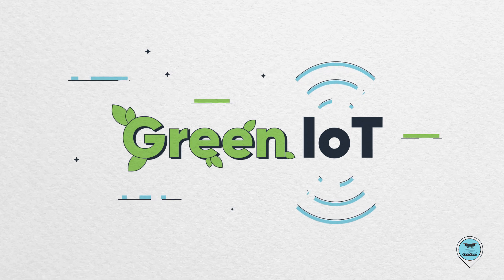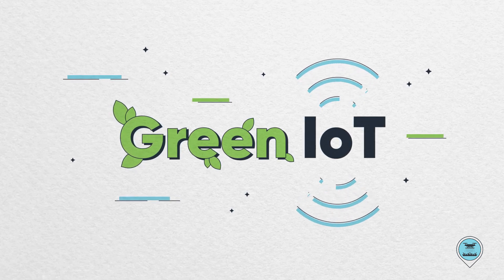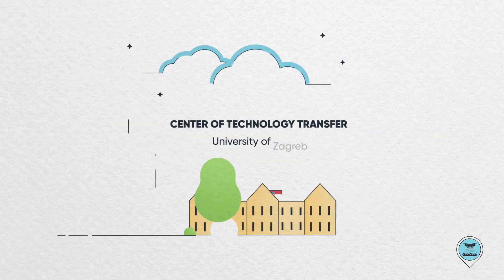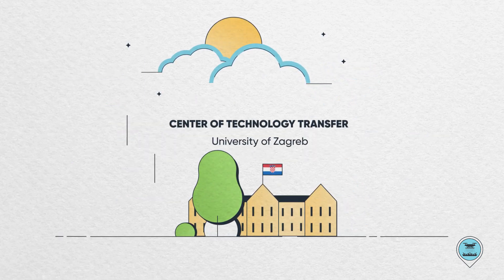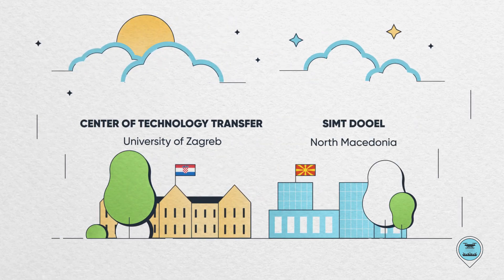This is what Green IoT Project achieved by utilizing IoT components for the development of an advanced metering infrastructure. Green IoT, executed by the Center of Technology Transfer of the University of Zagreb and Simst Duo, an information engineering company in North Macedonia.